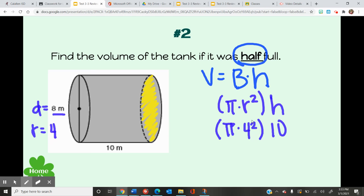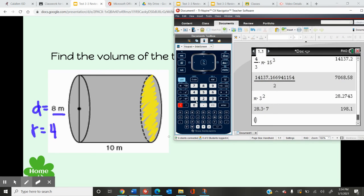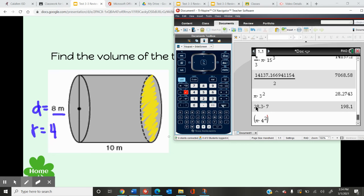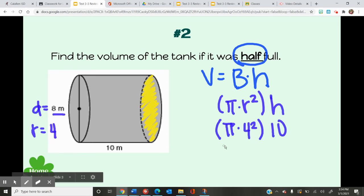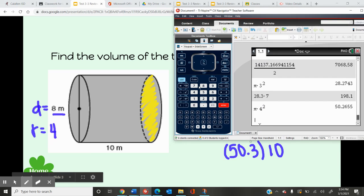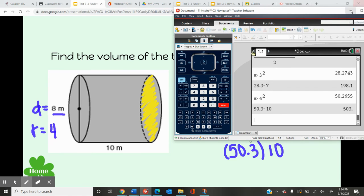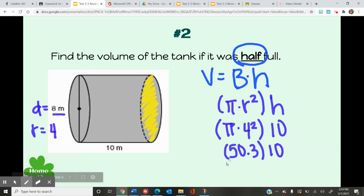Now I want to simplify the area of my base. So pi times 4 squared in my calculator. I get 50.26, and I'm going to simplify that to the tenths place. This is going to be 50.3, and I'm going to multiply that by the height, which is 10. So 50.3 times 10, we get 503. So here the volume of this tank is 503.